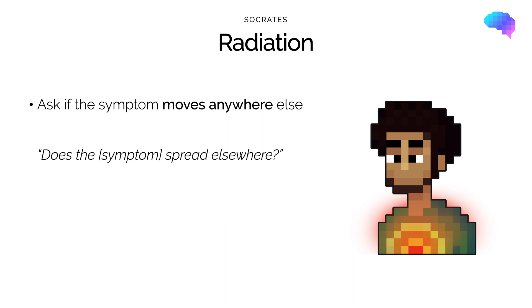Moving on, the next part of SOCRATES is Radiation. This involves asking the patient if the symptom spreads anywhere else. We associate this part of SOCRATES with pain history taking; however, this can be applied to other symptoms such as a patient with a rash.